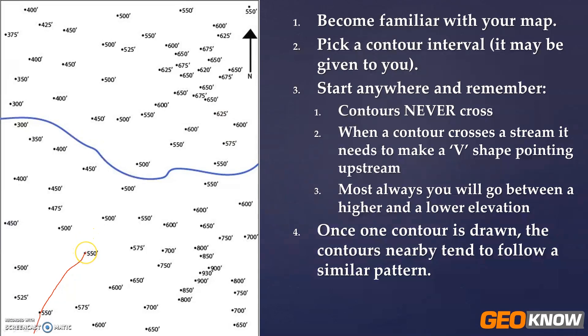Now I got to be careful here because I can't go up here to the northwest because I would be going between two lower numbers. I can't go this way because I would be going between two higher numbers. So I need to go between the 500 and the 575 and hit this other 550. Go between the 500 and the 600, hit this other 550. Point upstream since we have to cross the stream to get to this 550. Then wrap back around and come and hit this 550.